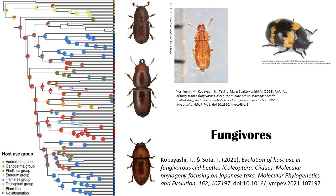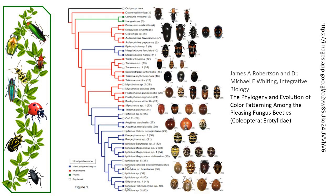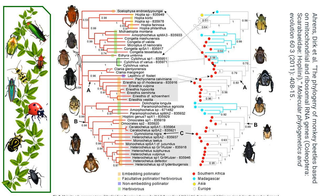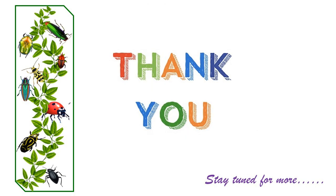The taxonomy of beetles is an ongoing and dynamic field of study, with new species being discovered and described regularly. As our understanding of their evolutionary relationships and molecular data continues to grow, the classification and taxonomy of beetles will likely undergo further revisions and refinements. However, this diversity and complexity only underscores the remarkable success and adaptability of these fascinating insects, which have conquered virtually every terrestrial habitat on our planet.